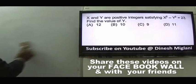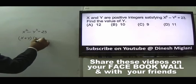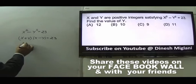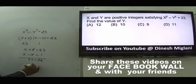Question 31: x² - y² = 23, both positive integers. Factoring: (x + y)(x - y) = 23. Since 23 is prime, x + y = 23 and x - y = 1. Adding: 2x = 24, x = 12, y = 11. Answer is D, y = 11.